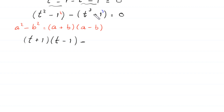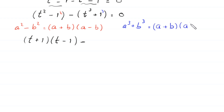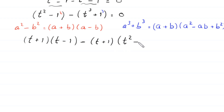We apply the sum of cubes identity: a cubed plus b cubed equals (a plus b)(a squared minus ab plus b squared). So t cubed plus 1 cubed becomes (t plus 1)(t squared minus t plus 1). Our expression is now: (t plus 1)(t minus 1) minus (t plus 1)(t squared minus t plus 1) equals 0.